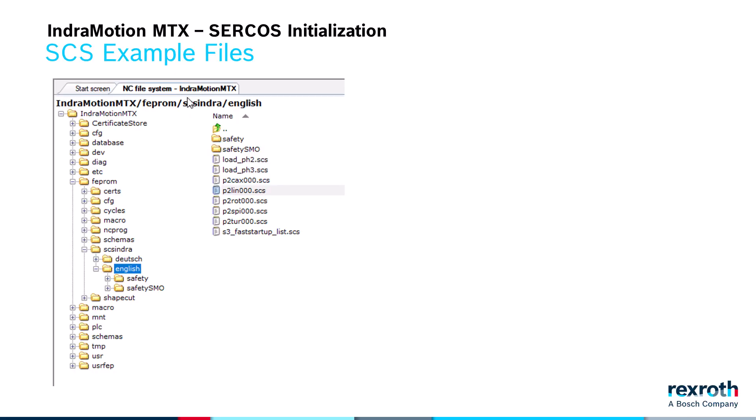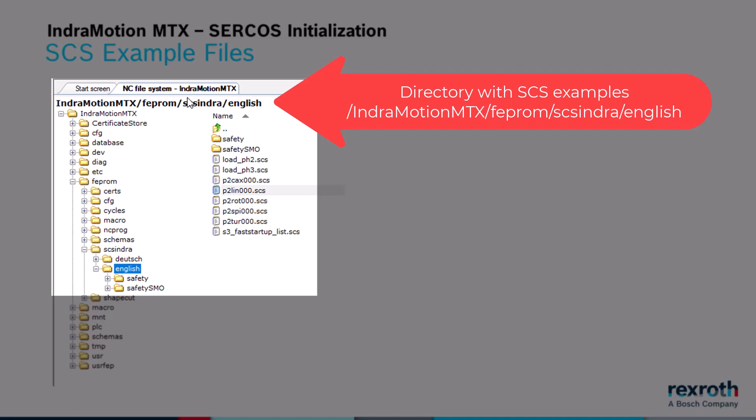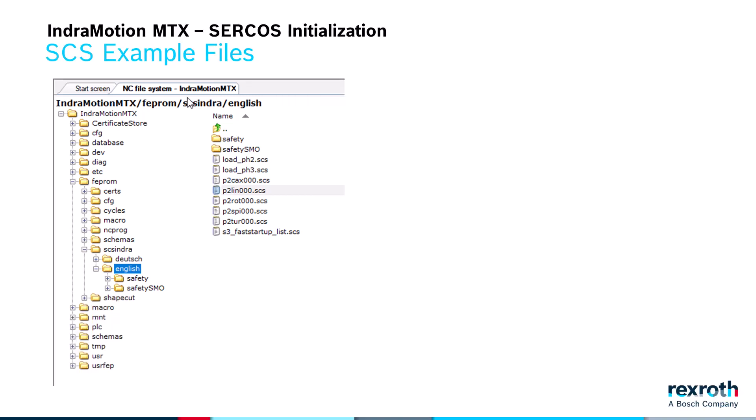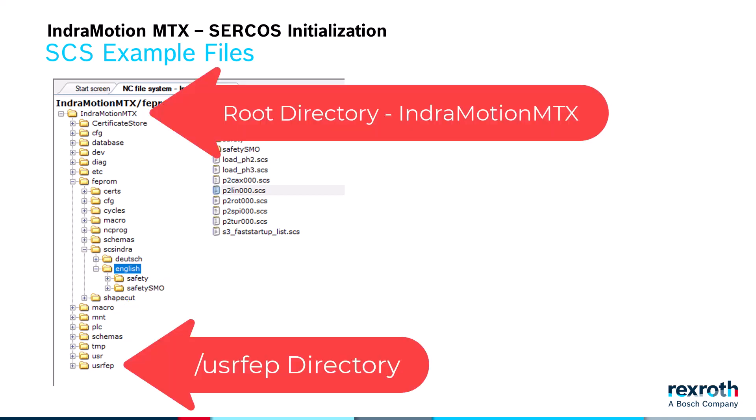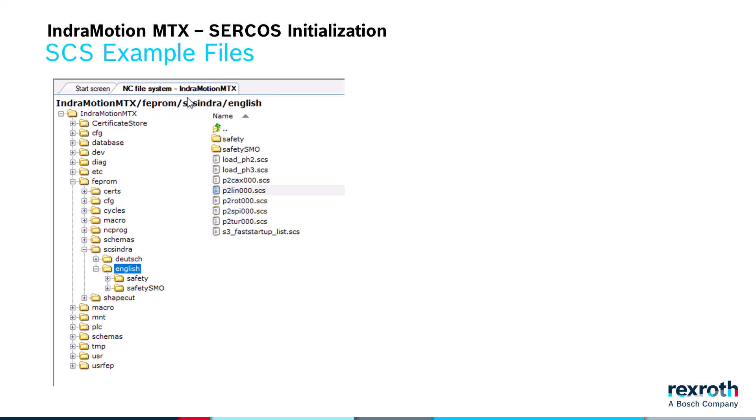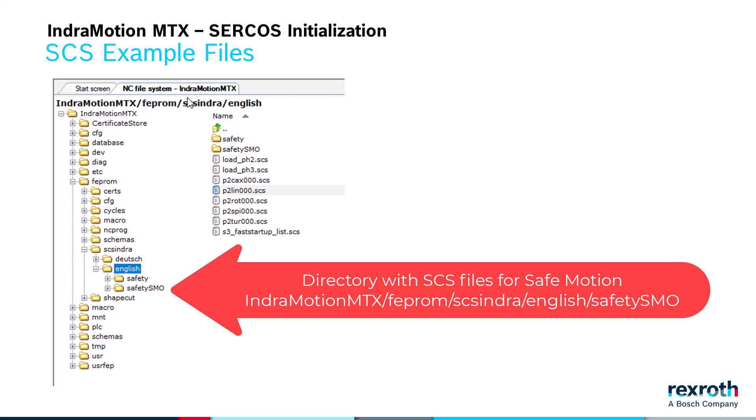SCS example files are located in this directory. You are not able to modify these files in this directory because it is located in flash memory. Copy the configuration files that you need to another location where they can be modified, like the mount directory. After adapting them to your machine, you need to copy them back to one of these directories — the root directory or the userfib directory — then restart the control. During startup, the control checks that these configuration files exist in either the root or the userfib directory; if they do exist, then the control will use them to initialize the drive parameters. Example SCS files for drives with SafeMotion are located in this directory.